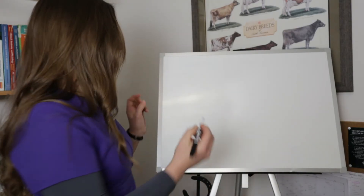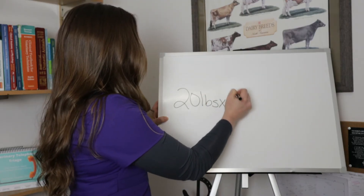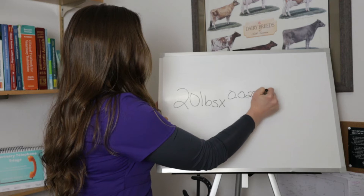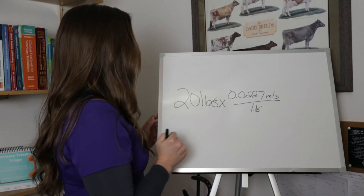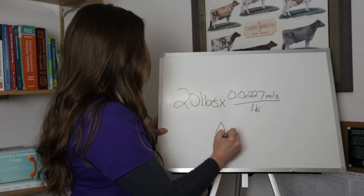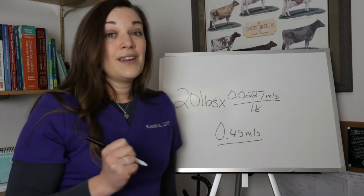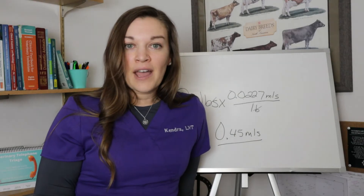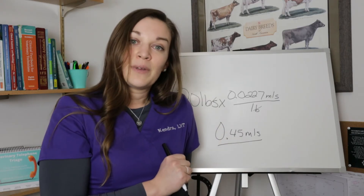Since we already know how many mLs per pound, this is going to be a short and sweet dimensional analysis — we don't need any concentration. For a 20-pound patient: 20 pounds × 0.0227 mLs per pound. Pounds cross out, leaving us with 20 times 0.0227, which comes out to 0.45 mLs of the drug. That's our first example of reading the vial, figuring out the dosage, plugging it in with patient weight, and getting the volume we need to give.